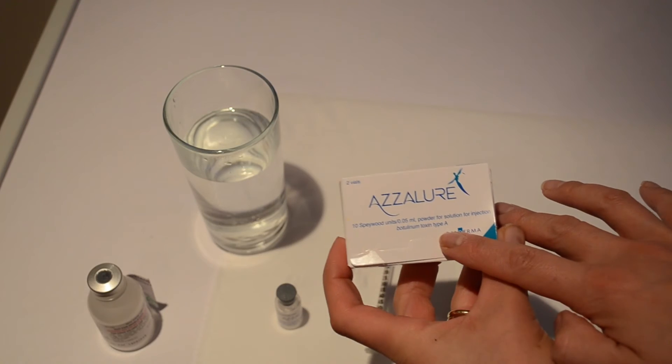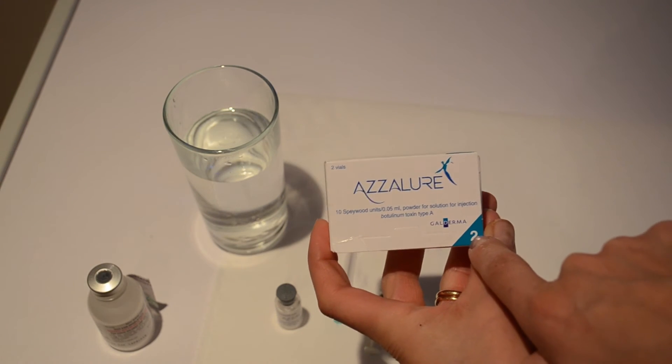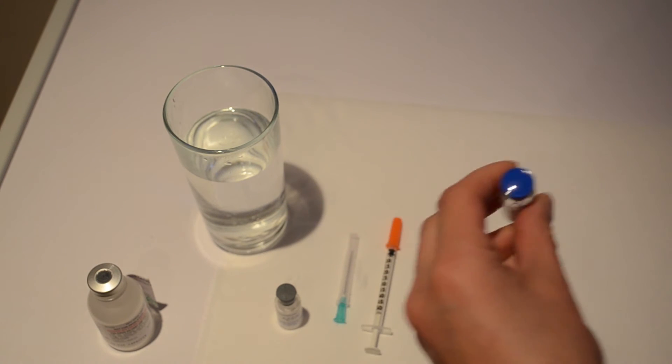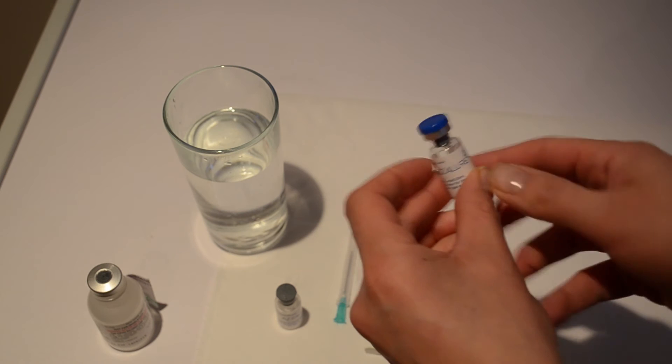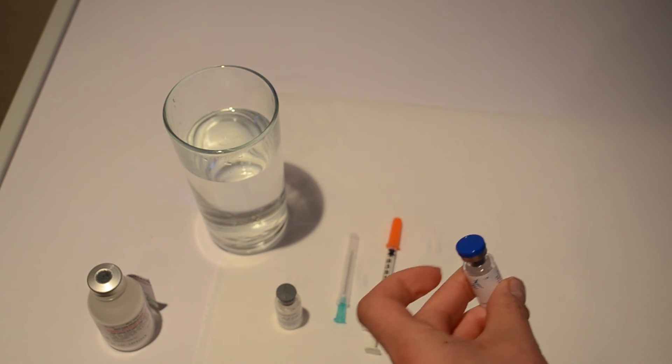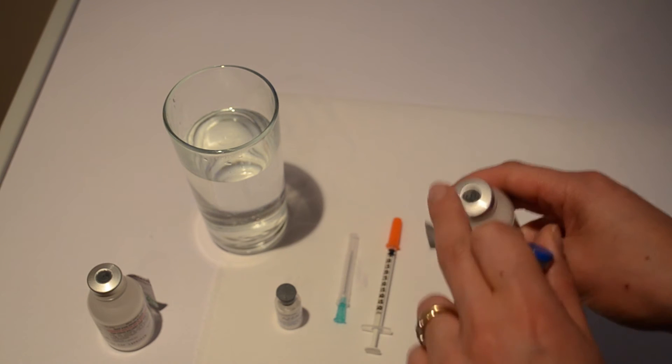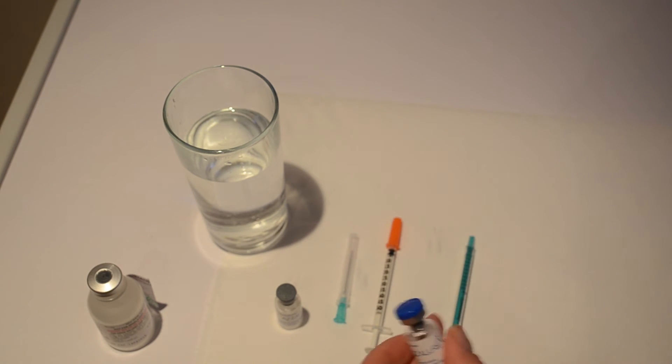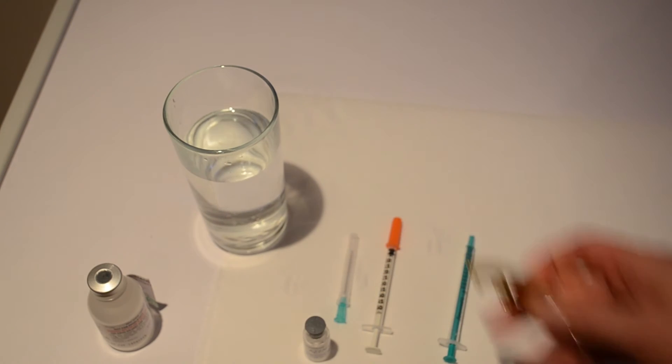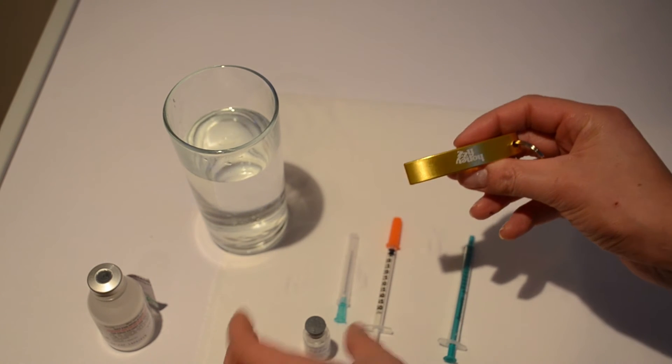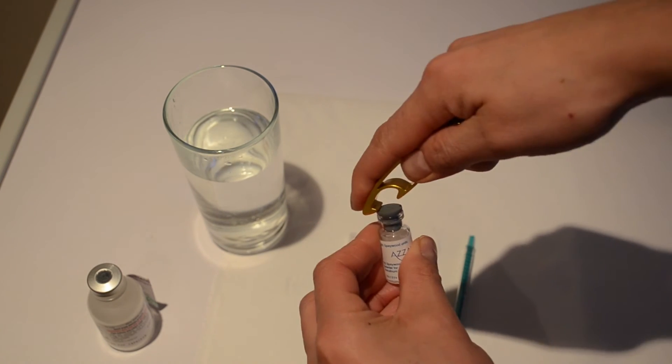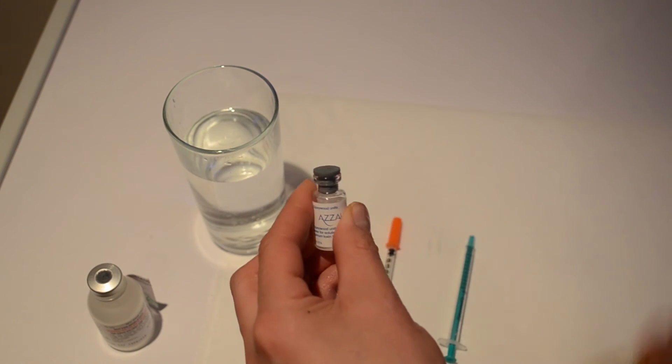Then you're going to have a box of AZZALURE maybe with two in a box and they come like this so you'll have the blue lid and you'll have a metal rim around the bung. A little bit like this saline rim. And so what you'll need to do is you need to pull the cap off this. In your starter kit you'll find that you get a decapper so you'll be able to pull that metal cap off your AZZALURE vial.